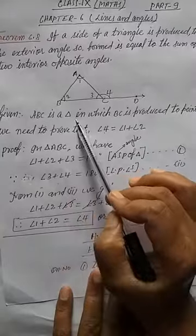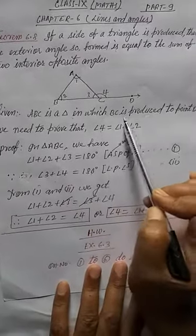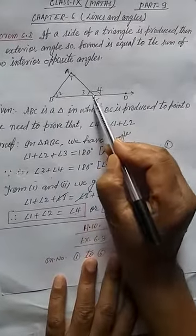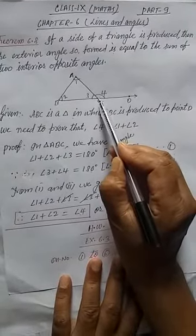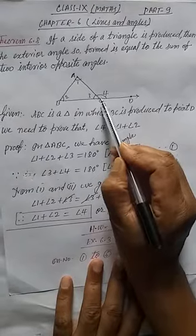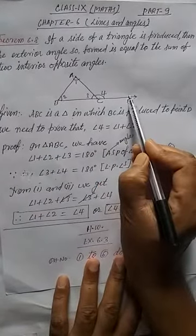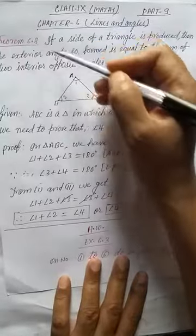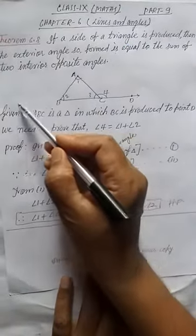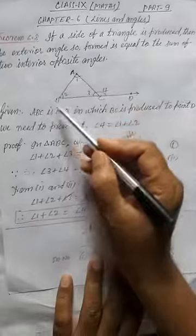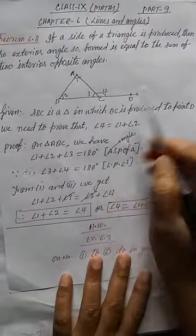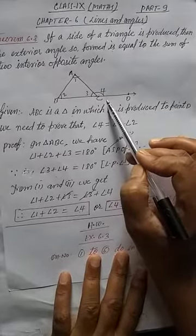Given: ABC is a triangle in which BC is produced to point D. So now see here BC. This is the BC side and we produce this BC side to point D. But you can produce also like this: AC produced like this here, and BC produced in this direction also. This is up to you. Whatever side you want to produce, you can produce and you can prove.